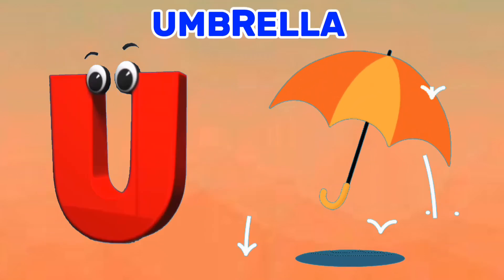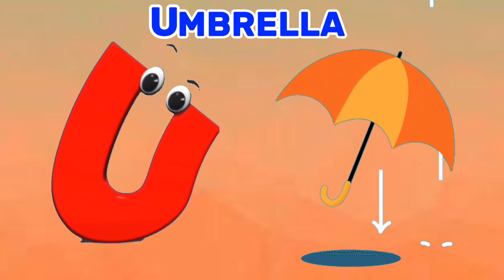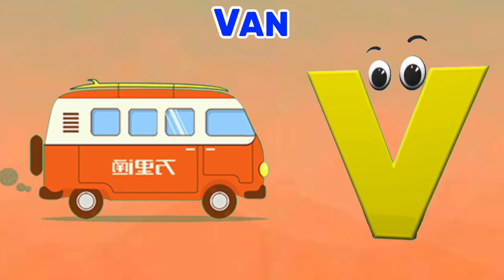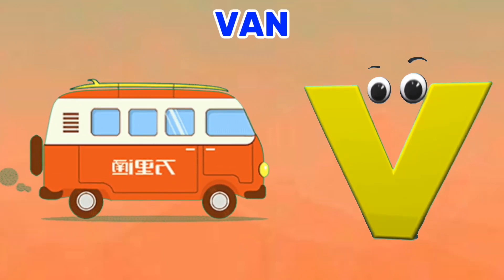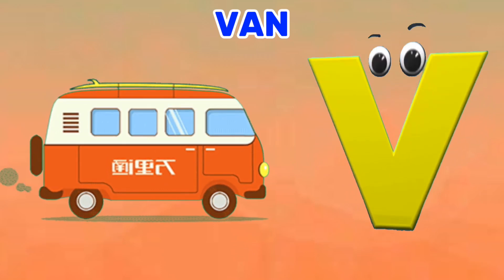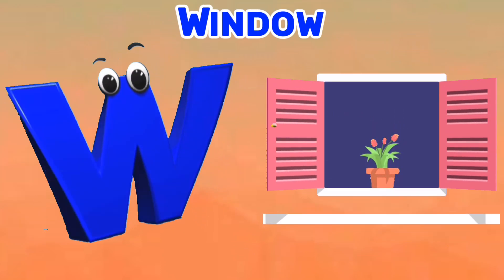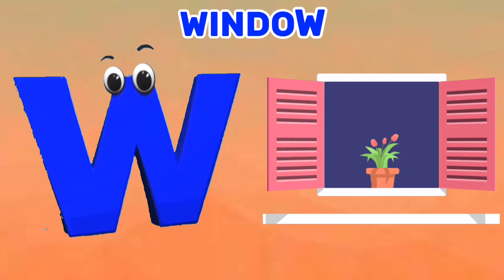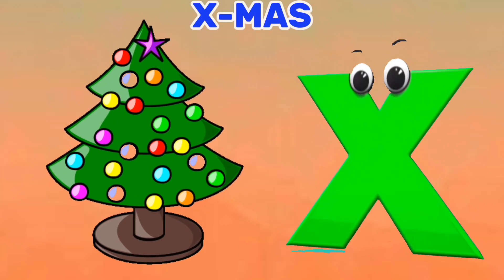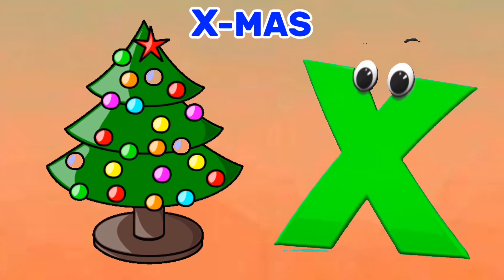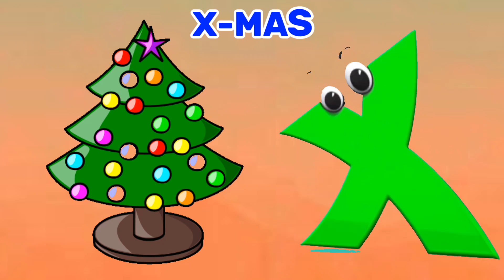U is for Umbrella. U, U. Umbrella. V is for Van. V, V. Van. W is for Window. W, W. Window. X is for Xmas. X, X. Xmas.